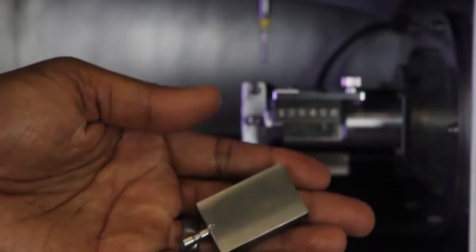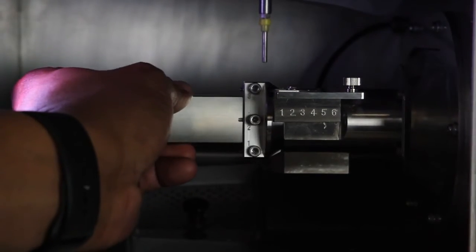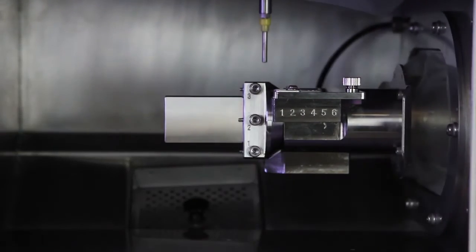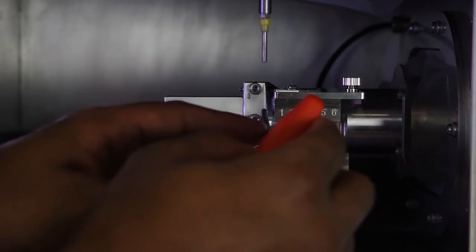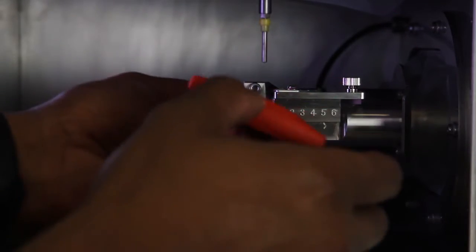Then, insert the automatic correction jig. Check to be sure there is no gap between the edge of the correction jig and the mounting part. Tighten the mounting screw with the hexagonal screwdriver to secure the position of the automatic correction jig.